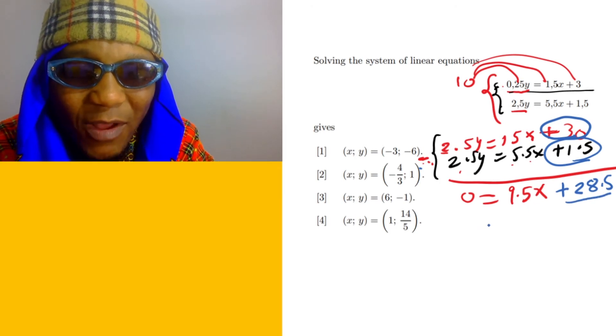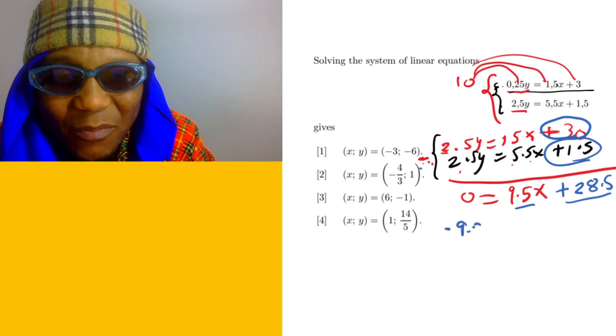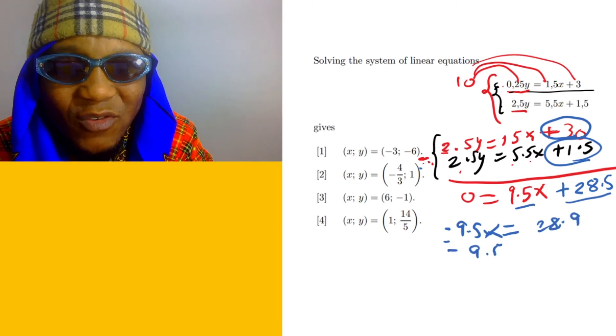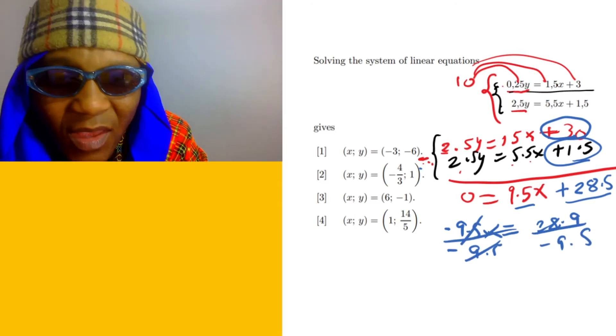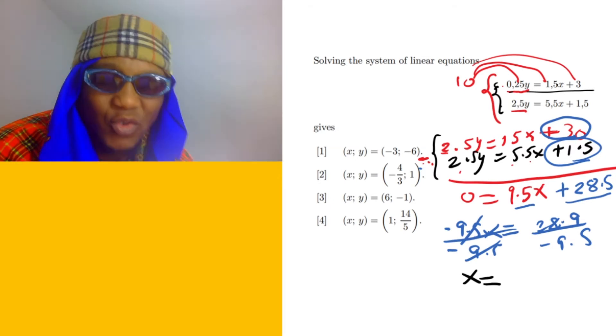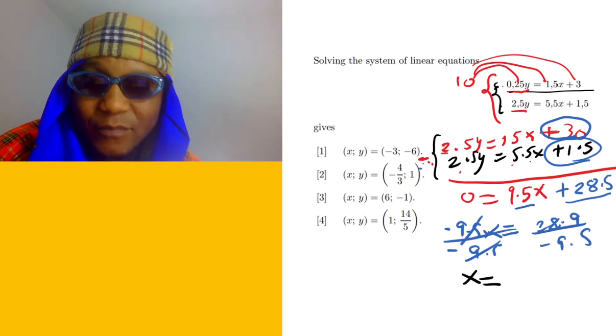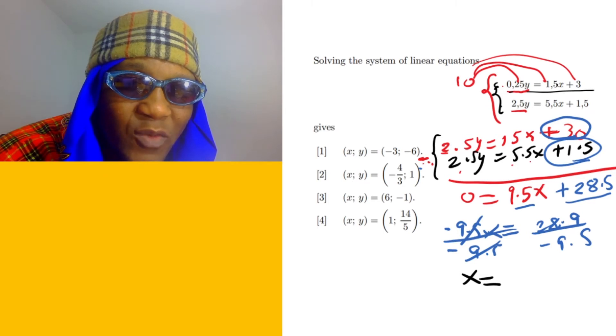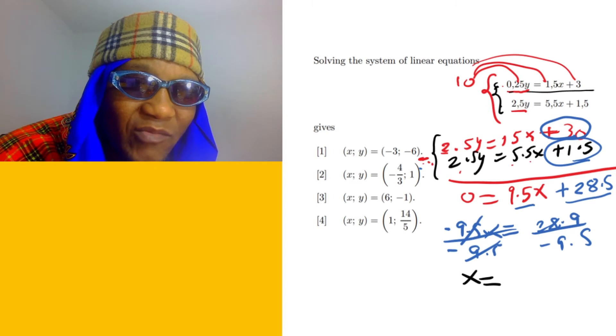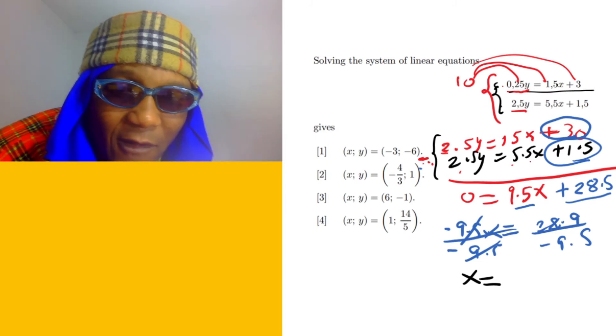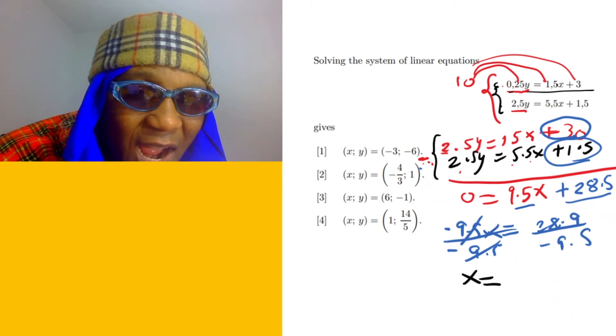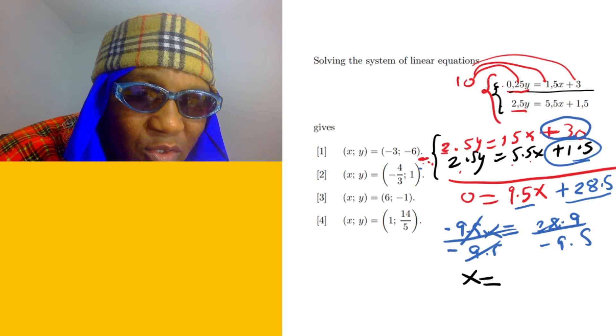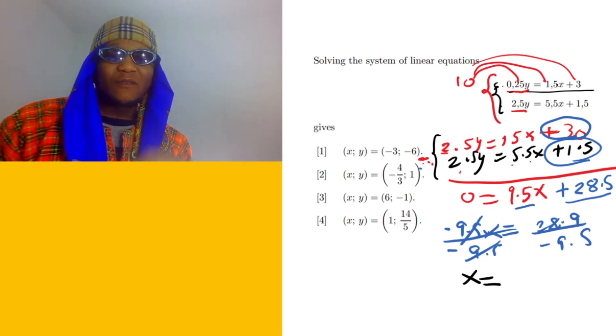We can take this one over, so it's gonna become negative 9.5x equal to 28.5. I can divide by negative 9.5 to get the value of x. Negative 9.5 and this cancel, and then we have x equal to 28.5 divided by negative 9.5. Let's go to the fraction: 28.5 divide by negative 9.5. This is gonna give us negative 3. The value of x equals negative 3.